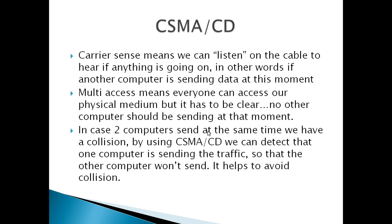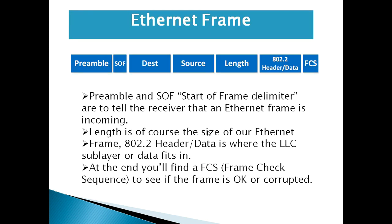Now let's look at what an ethernet frame looks like. It has a certain set of headers. It has a source and destination, which are the source and destination MAC addresses. The source address is where the frame comes from, and the destination address is the remote host. There is also a preamble and Start of Frame Delimiter (SOF), which tells the ethernet frame that a data link layer packet is incoming.